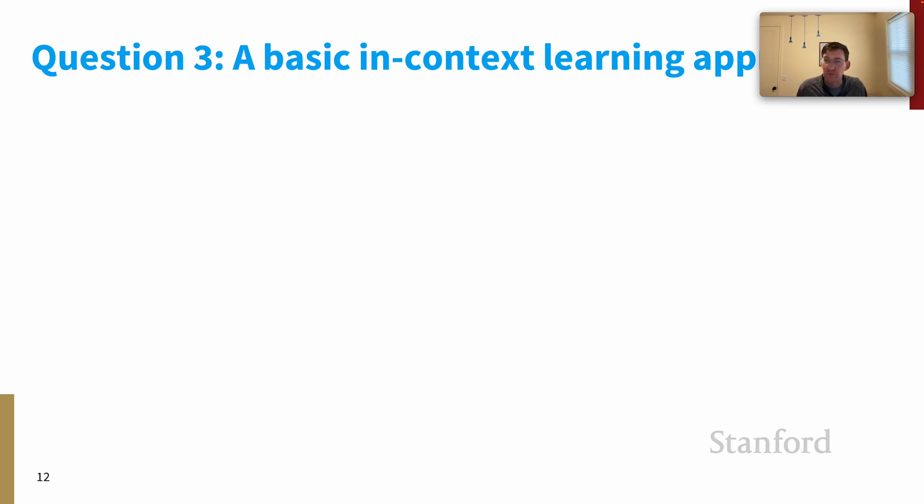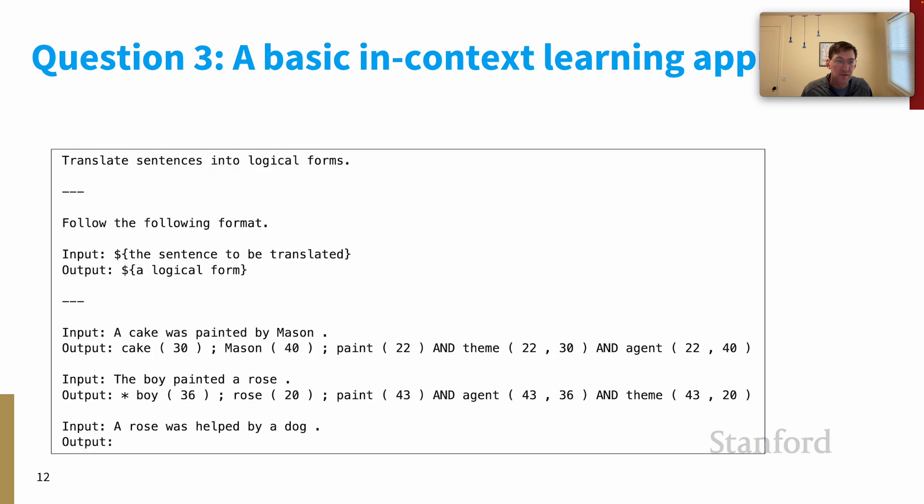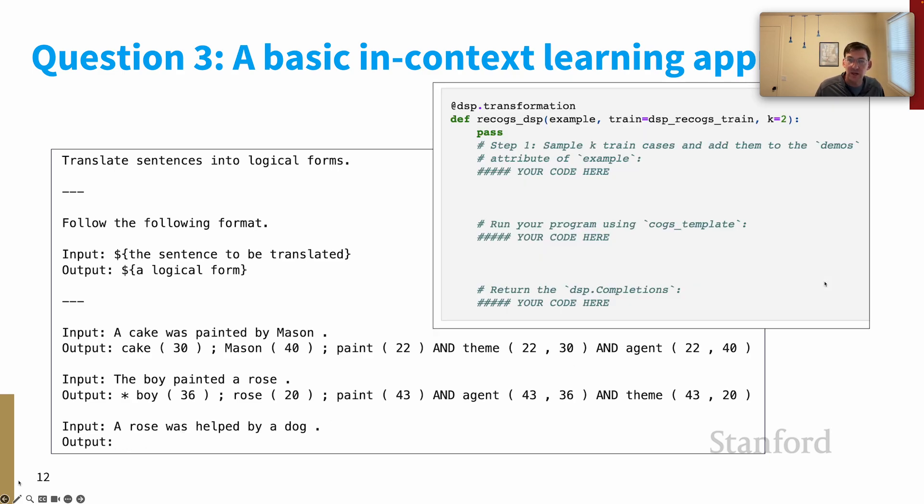The final question for the main part of the homework, question three, switches gears entirely. This is a basic in-context learning approach. And the idea here is to just get you over the hill in terms of using DSP, as we did in homework two, and applying it to this new case. And my thinking here is that if I push you a little bit to write your first DSP program for ReCOGS, you might try more versions of that and really make progress. So here's the kind of prompt that you'll offer to the model.